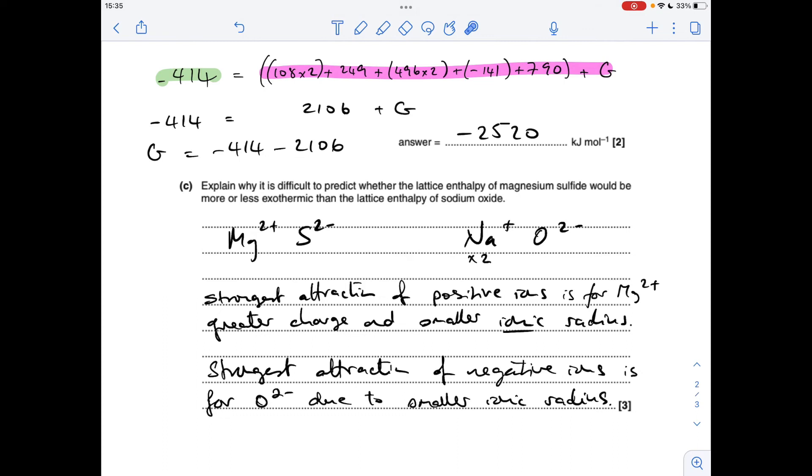Moving on to part C now. If we think about the ions that make up each lattice, so magnesium sulfide is made from these, sodium oxide is made from these. In terms of the positive ions first, so this versus this, the strongest attraction is going to be for the magnesium 2+ ion. Think about the charge, 2+ versus 1+, so we've got a greater charge in the magnesium ion and also radius, ionic radius more specifically. These aren't atoms, remember. The smaller the ionic radius, the greater the attraction. Magnesium has the smaller ionic radius of the two, so of the positive ions, the strongest attractions from the magnesium 2+ ion.